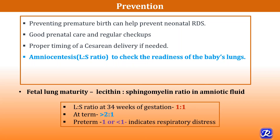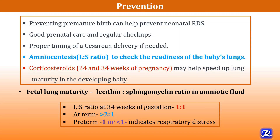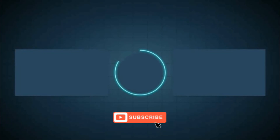The LS ratio at 34 weeks of gestation is 1:1. At term, it is more than 2:1. In preterm, it is 1 or less than 1, which indicates respiratory distress. During pregnancy, corticosteroids can be given and may help speed up lung maturity in the developing baby.